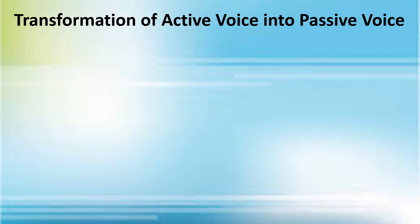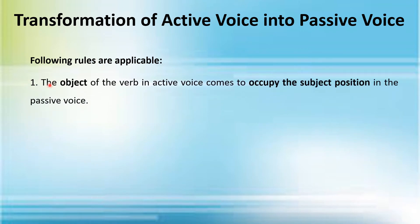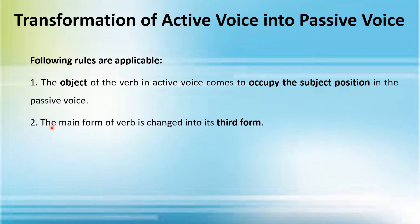In order to transform a given active voice sentence into its passive form, we follow certain rules. Number one: the object of the verb in active voice comes to occupy the subject position in the passive voice — the object takes the position of the subject and the subject goes to the position of the object. Number two: the main form of the verb is changed into its third form; you always put the third form of the verb in passive voice sentences.